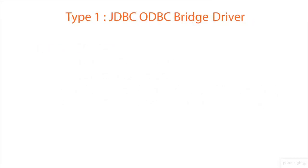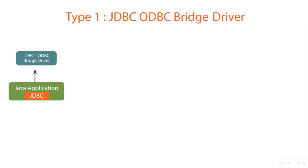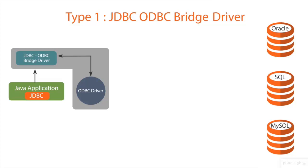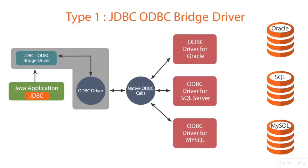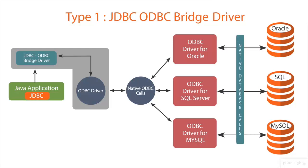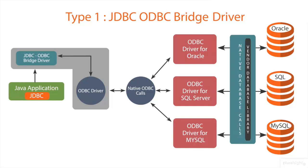Now let us understand the Type 1 JDBC-ODBC bridge driver. Whenever a Java application uses a Type 1 JDBC driver, it uses an ODBC driver to connect to the database. The JDBC-ODBC bridge driver converts JDBC method calls into ODBC calls, which are then converted into native DBMS-specific calls using the vendor database library, and the request is redirected to the database for processing.